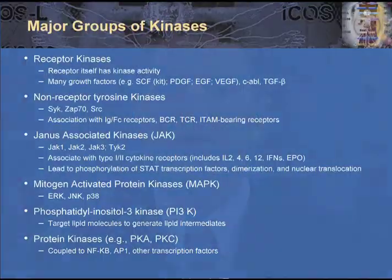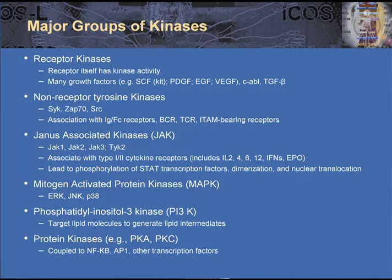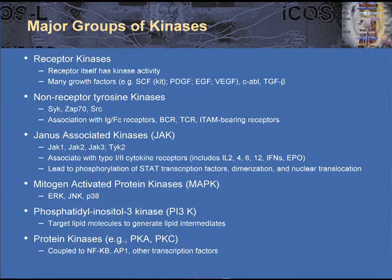There are multiple groups of kinases. Receptor tyrosine kinases have intrinsic kinase activity and are typical of many forms of growth factors: stem cell factor and the receptor C-kit, the receptors for platelet growth factor, epidermal growth factor, and vascular growth factors, as well as the BCR-ABL translocation that occurs in chronic myelogenous leukemia. The receptor for TGF-beta is also a receptor tyrosine kinase. Non-receptor tyrosine kinases are typified by the Src family kinases, SYK or spleen tyrosine kinase, and ZAP70, a kinase important in T-cell activation. These are often associated with immunoglobulin and FC receptors, the B-cell receptor, the T-cell receptor, and ITAM-bearing receptors that allow for phosphate transfer on the receptor tail.